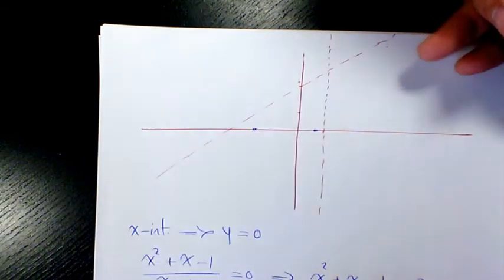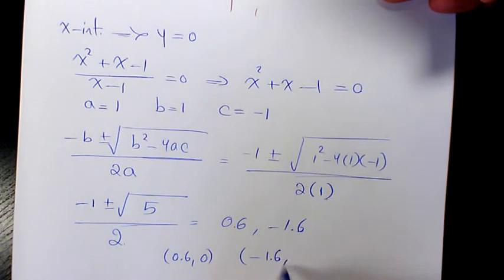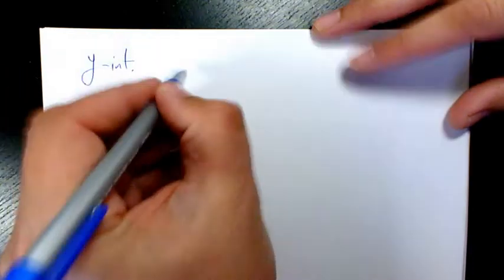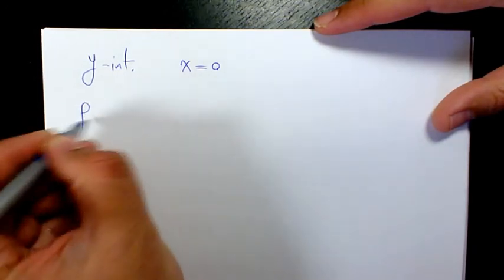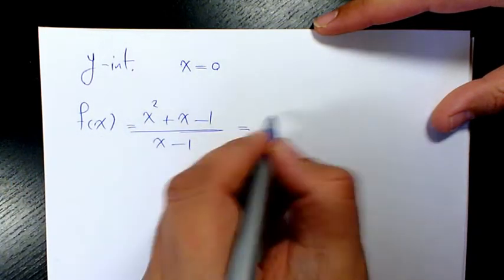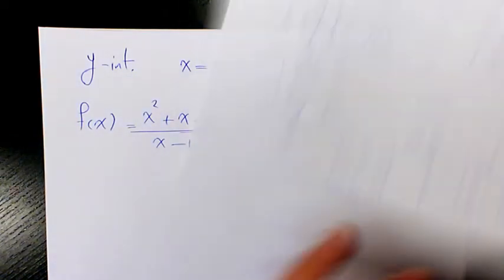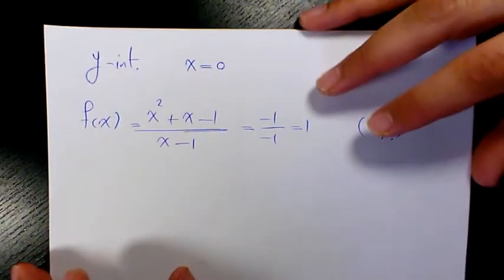So we have two x-intercepts at 0.6 and −1.6. For the y-intercept, set x = 0: f(0) = (0 + 0 − 1)/(0 − 1) = −1/−1 = 1. So the y-intercept is at (0, 1).